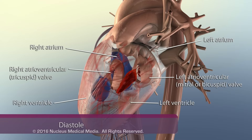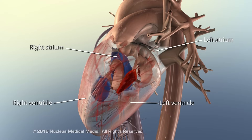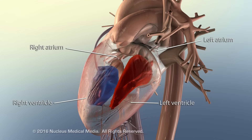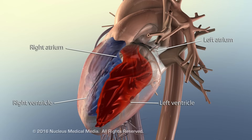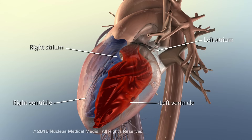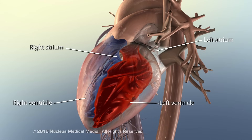During atrial systole, the atria contract and force any remaining atrial blood into the ventricles. The ventricles are still in diastole, allowing them to expand and completely fill with blood.